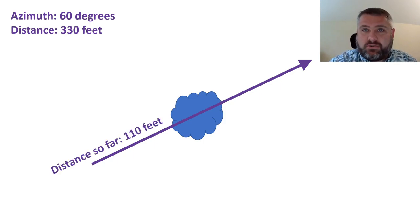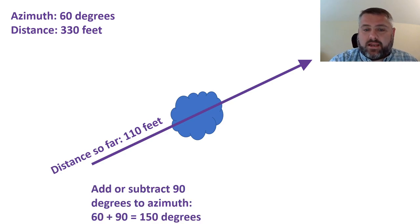You need to note down the distance that you've paced thus far. In this example they've already gone 110 feet. Then you take your azimuth and you add or subtract 90 degrees. You could use another angle other than 90 but 90 is going to be usually the most efficient way to get around something.